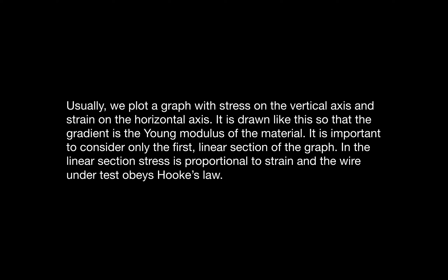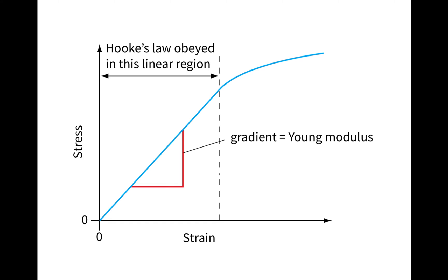To find Young's modulus, the most efficient way is to plot a graph. Since Young's modulus is stress over strain, stress goes on the y-axis and strain on the x-axis. The gradient of the linear part of the graph gives Young's modulus. After a point, the graph curves, as only the linear region obeys Hooke's law. Using a graph and finding the gradient is always better than using a single pair of values, as it reduces the chance of error.